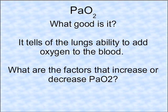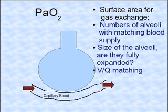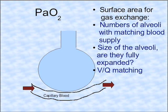What are some of the factors that cause an increase or decrease in PaO2? Very important to oxygen entering the blood is the surface area for gas exchange. Oxygen is relatively slow diffusing compared to CO2, and so it requires a very large surface area — about 60 square meters, or the size of a tennis court. These alveoli must be fully expanded and have matching blood supply, known as VQ matching or ventilation-perfusion. Ventilation without blood supply, or blood supply without ventilation, can lead to hypoxemia or a low PaO2.